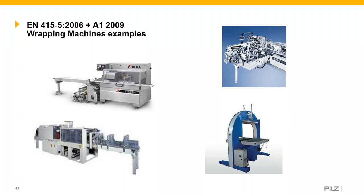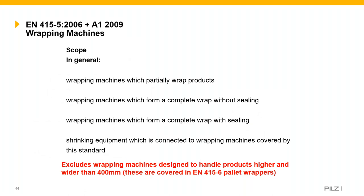Part 5 covers wrapping machines. It's important to note that section 5 only covers wrapping machines designed to handle products less than 400 millimetres; anything above this is covered by part 6. Examples include continuous flow wrappers, high-speed wrappers, tray wrappers with a heat shrink tunnel, and horizontal wrappers.